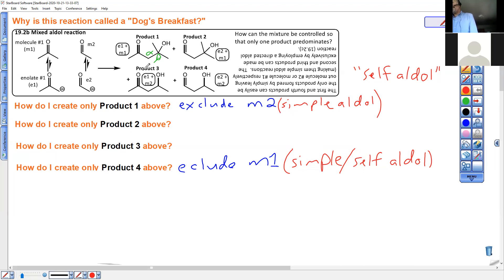Product three, I need the enolate from only this molecule. So I need enolate from one to attack only the unreacted molecule two.